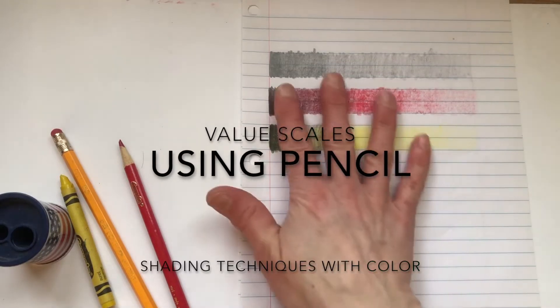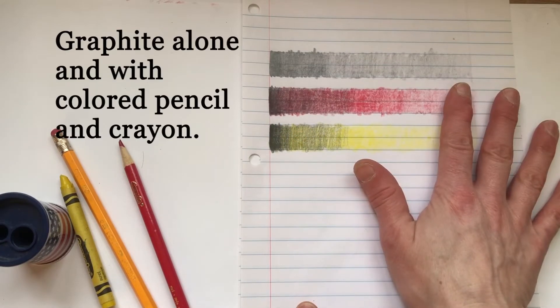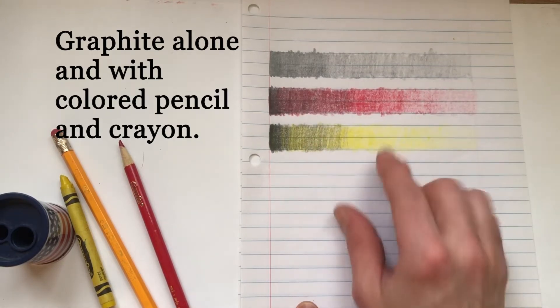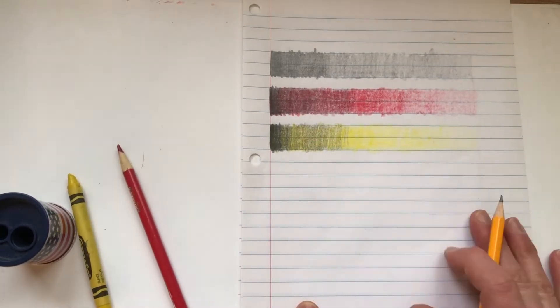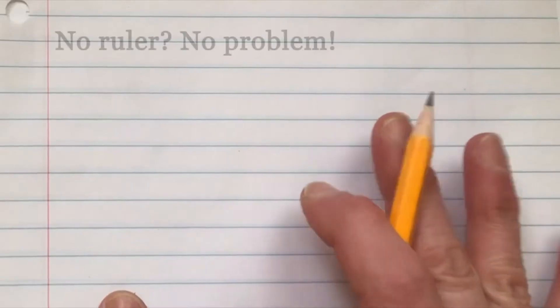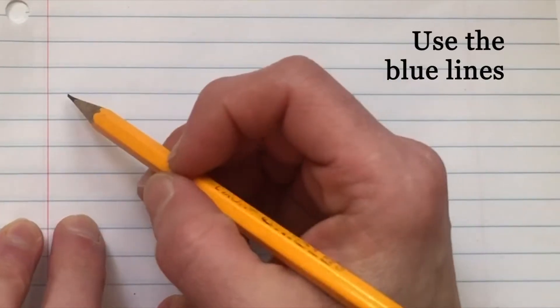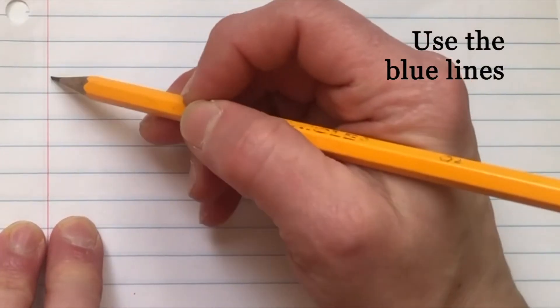Hi everybody. Today I want to go over creating value scales using pencil, crayon, and colored pencil. One of the ways, I know some of you are without rulers at home, you can use a sheet of loose leaf. If you don't have any paper, this is a good alternative as well to practice.